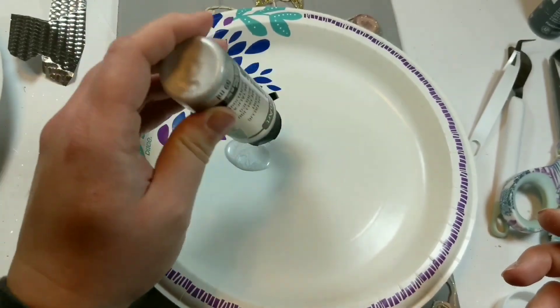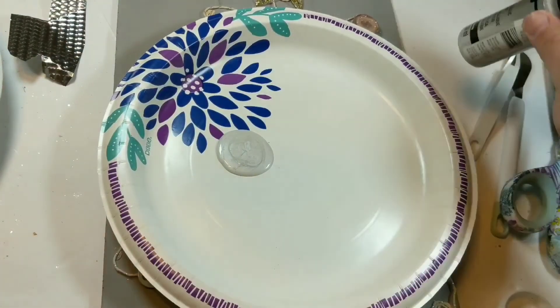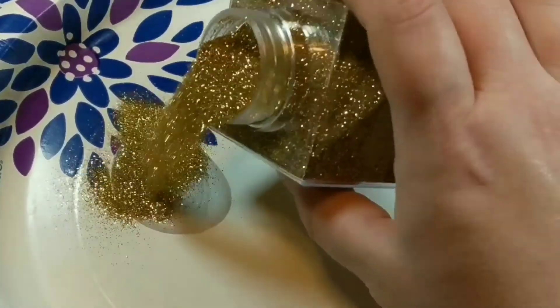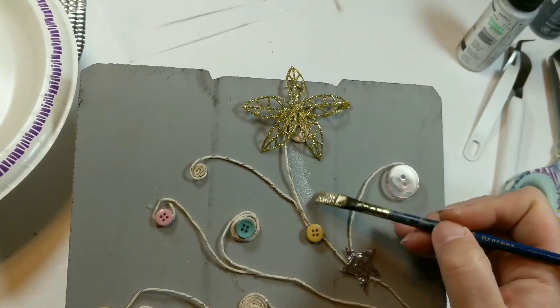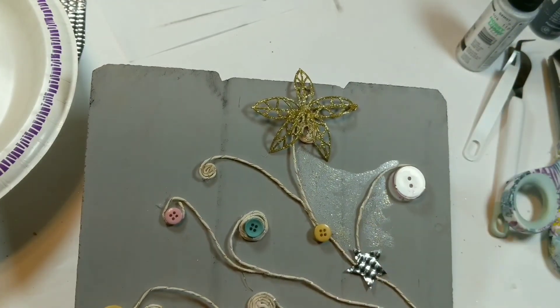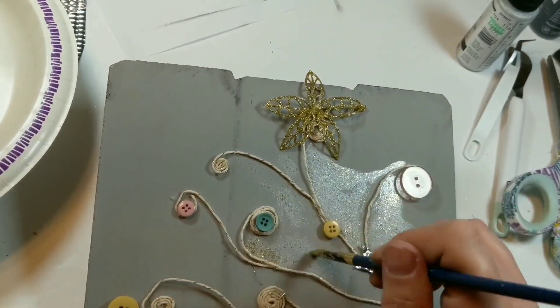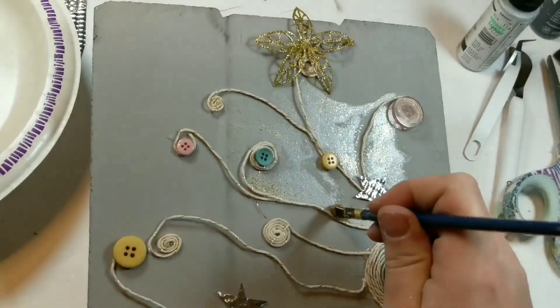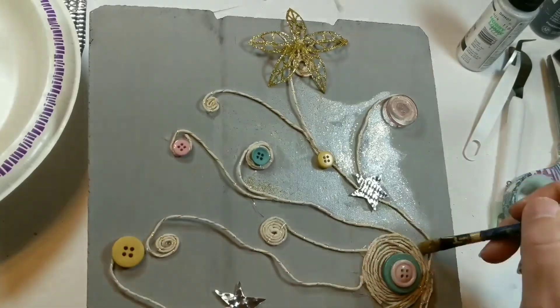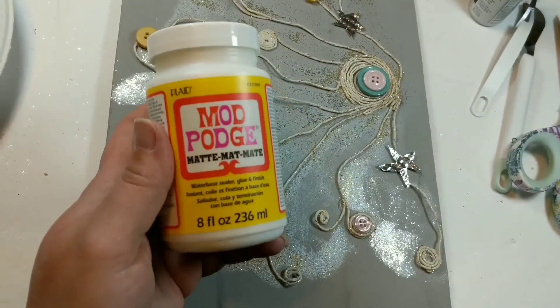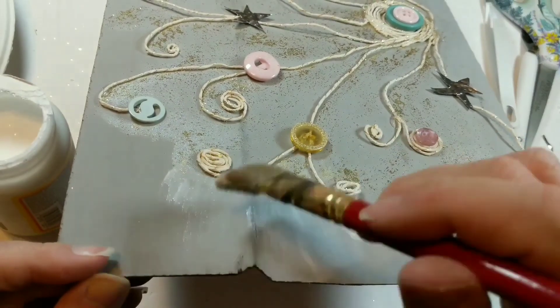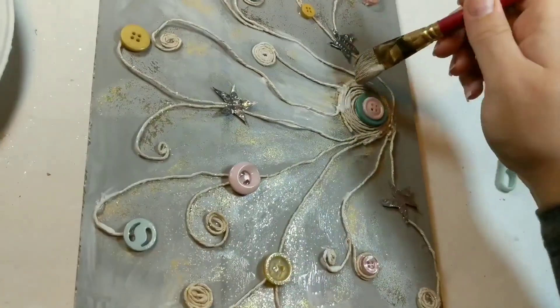Then I took some metallic silver paint and added some gold glitter and filled in the tree. You do not have to do this step if you do not want to. I just thought how cute it would be to actually kind of see the outline of a tree, and then I sealed it with some Mod Podge.